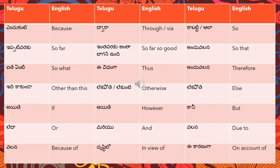The first word is 'because' and the Telugu translation is 'endu kante'. Endu kante is translated into English as 'because'. 'Dwara ante' means 'through' or 'vaya' - you can also say 'by the medium of'. So dwara means through or vaya.